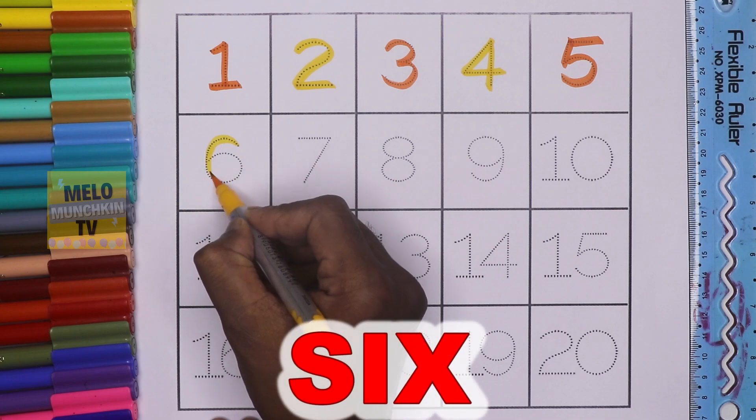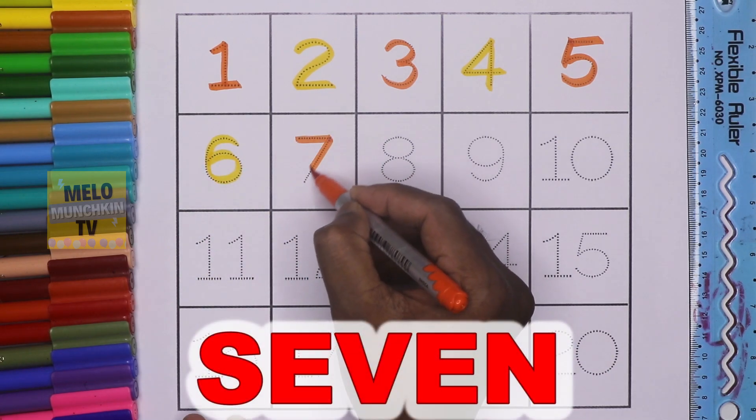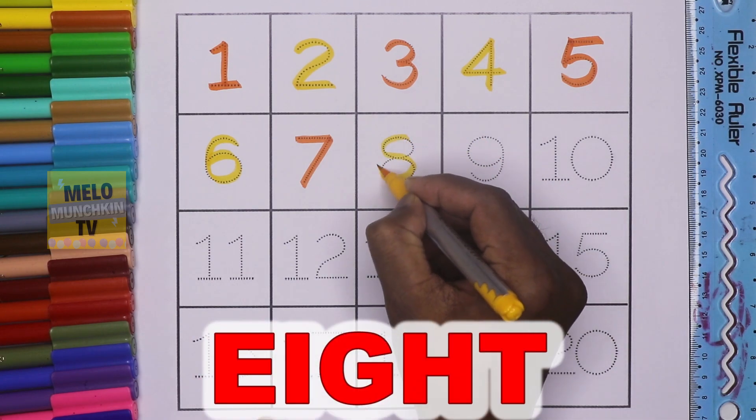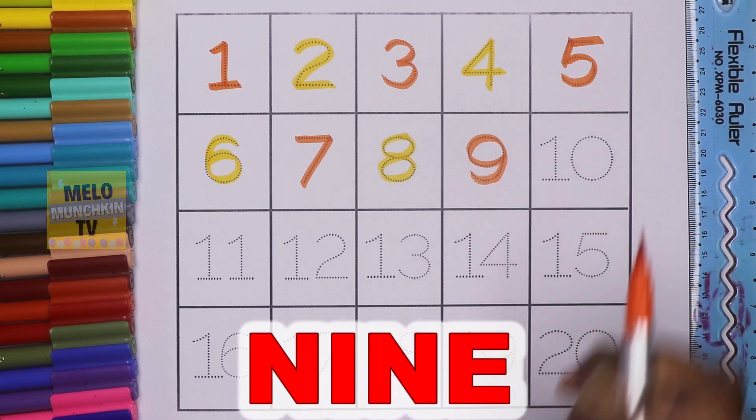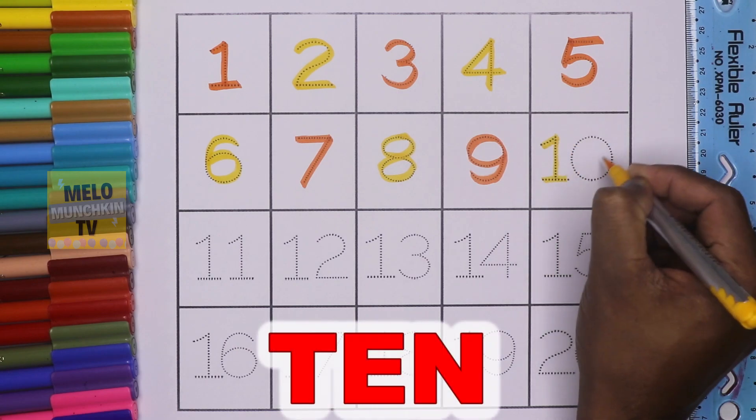This is number 6. S-I-X-6. This is number 7. S-E-V-E-N-7. This is number 8. E-I-G-H-T-8. This is number 9. N-I-N-E-9. This is number 10. T-E-N-10.